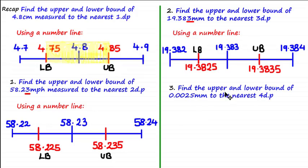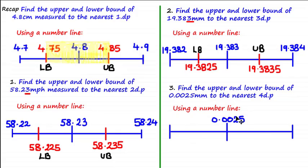Next example: find the upper and lower bound of 0.0025 millimeters to the nearest four decimal places. Using the number line, we place the estimated value in the middle and find the next values up and down. This has been rounded to the nearest four decimal places, and the value at the fourth decimal place is 5, which we use to calculate the next terms by adding or subtracting 1.